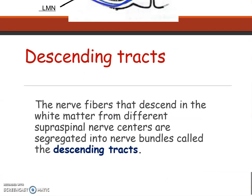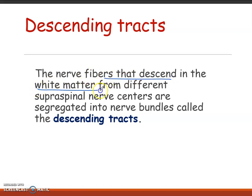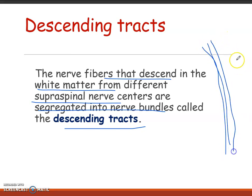The descending tracts are the nerve fibers that descend in the white matter from different supraspinal nerve centers. They are segregated into nerve bundles called the descending tracts — basically, the nerve fibers from the white matter come together and a tract is formed.